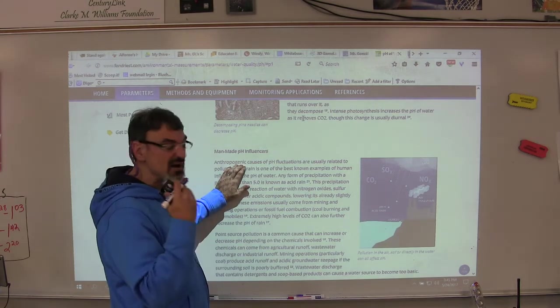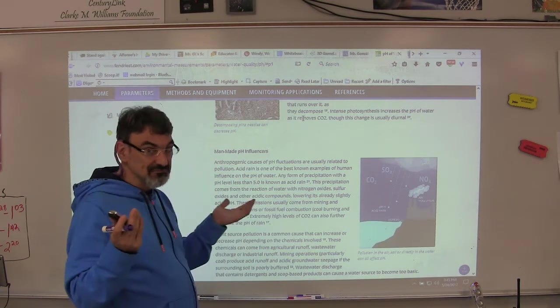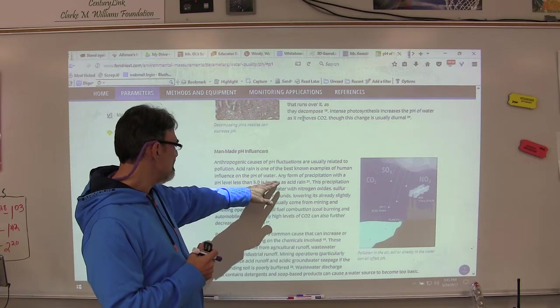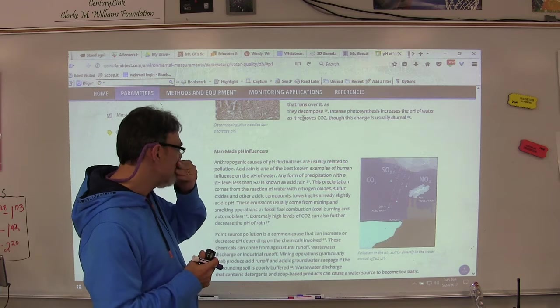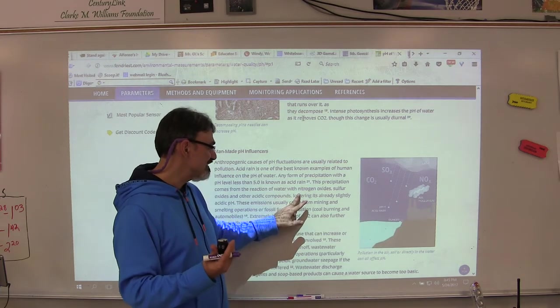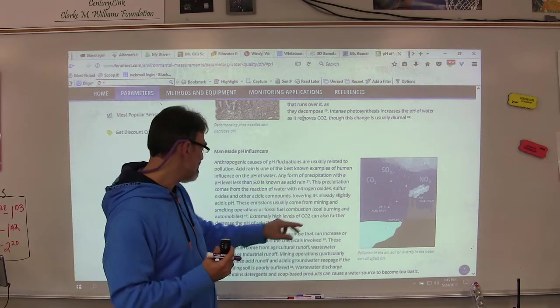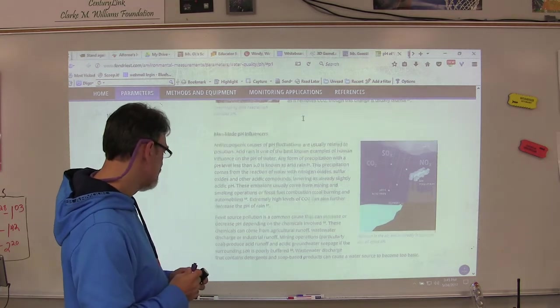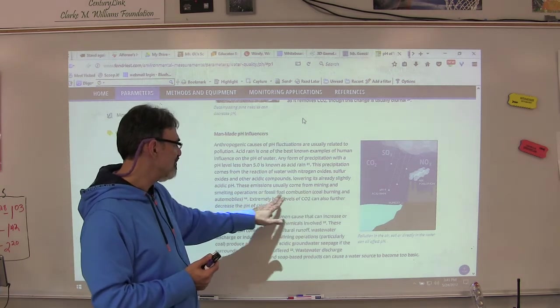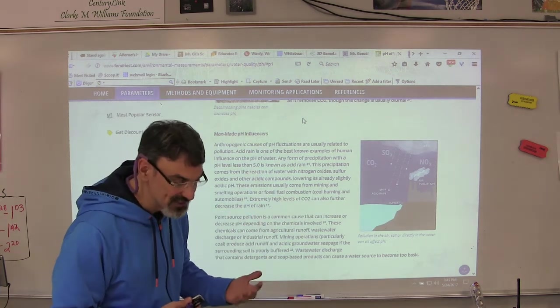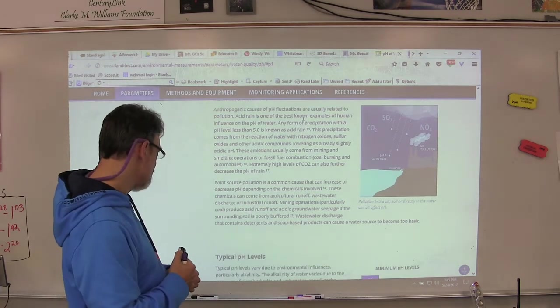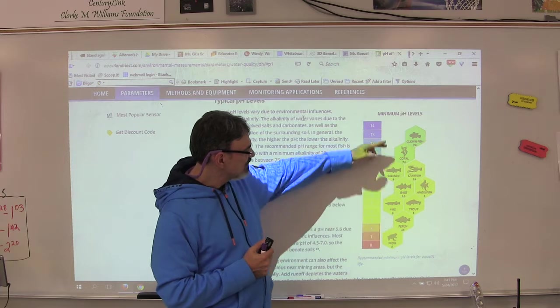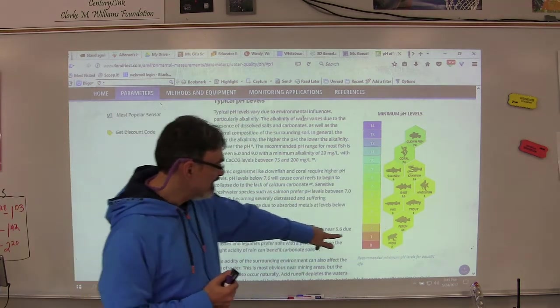Other influences that are made by humans - anthropogenic is a word that means caused by humans, usually related to pollution. Pollution is how we affect the pH of water. Acid rain is a form of precipitation with pH less than 5.0. It comes with the reaction. Acid rain can be caused by mixture with nitrogen oxides, sulfur oxides, and other acidic compounds including carbon dioxide. It comes from smelting operations, mining, or fossil fuel combustion, burning of fossil fuels, as we learned from all the climate change videos we saw. And then here you have minimum pH levels for different types of fish and other animals like the frog.